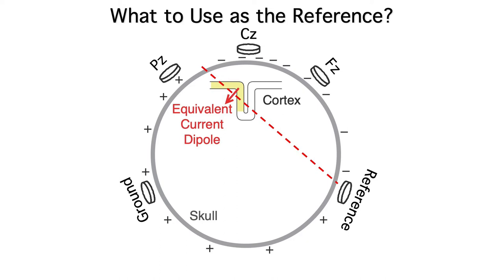If we did, then the voltages we record at FZ, CZ, and PZ would be the absolute voltages at those sites. But to know where the zero line is, we'd need to know the location and orientation of the generator dipole.